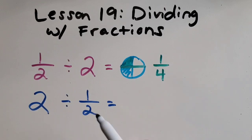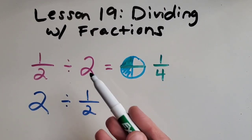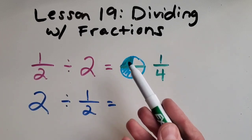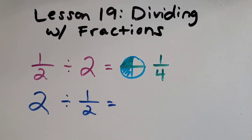Just think about it like this. If I had half of a cookie and I want to split it between two people, it makes sense that one person would get this part, one person would get this part.